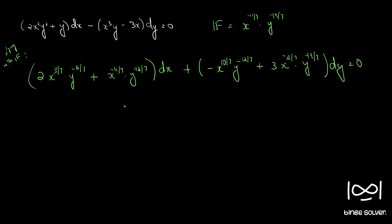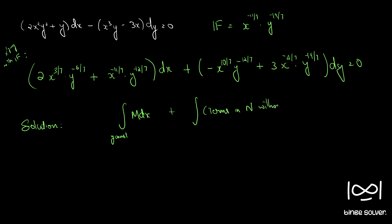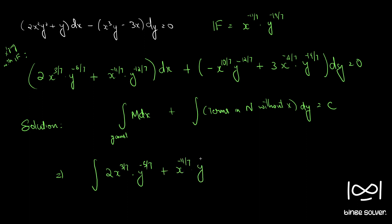Applying the exact equation solution formula: ∫M dx (y constant) + ∫(terms in N without x) dy = constant. Since every term in N contains x, the second integral vanishes. So we only integrate M with respect to x, keeping y constant.